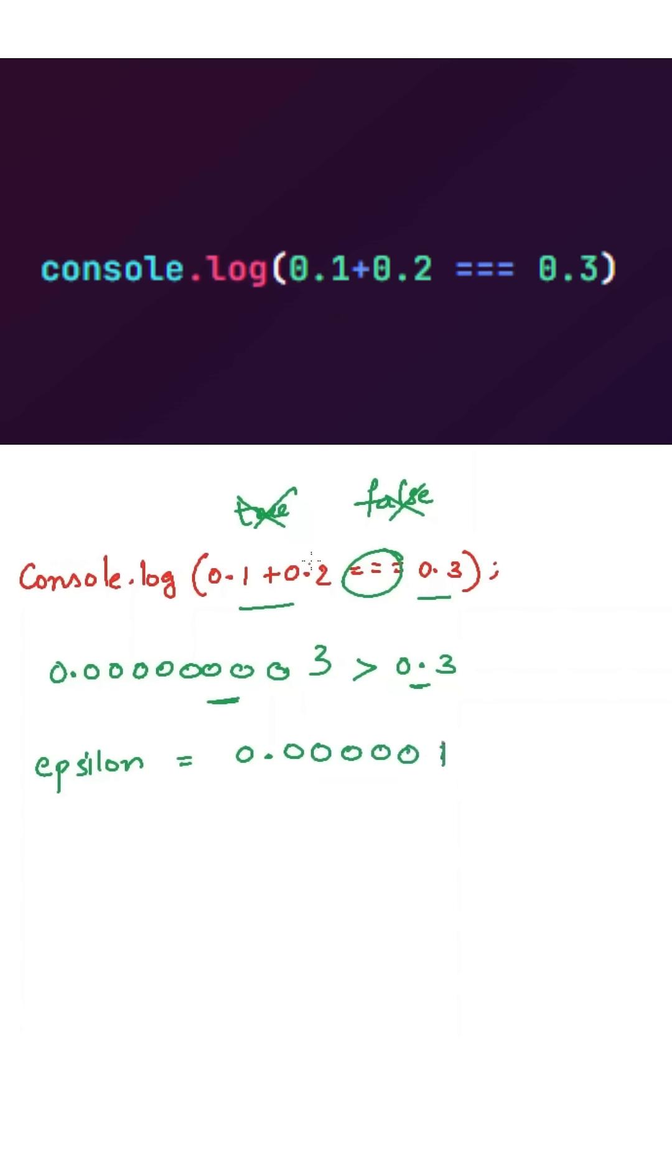Now we need to take the absolute difference value of this and we need to compare the value of this as well as this. So if the value is more than the epsilon value, then it is false. These both are not equal. If it is less than the epsilon value, then these both are equal.